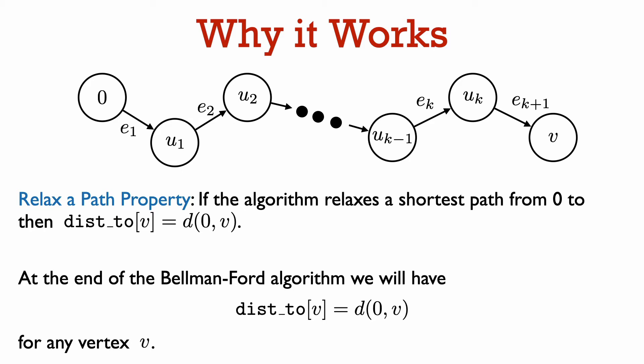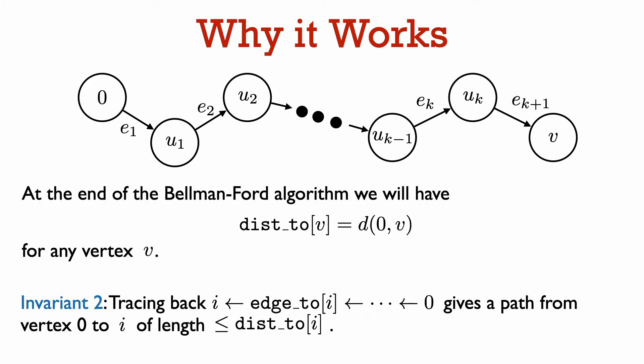This argument holds for any shortest path from zero to another vertex. So at the end of the algorithm, we will have dist2 of v equal to the distance from vertex zero to vertex v for every vertex v in the graph. Note that this will also hold for vertices not reachable from v, where dist2 of v will just be infinity. Since the Bellman-Ford algorithm follows the generic template, tracing back from vertex i using the edge2 array gives us a path from vertex zero to vertex i of length dist2 of i. So tracing back in the edge2 array from vertex i will give us a shortest path to vertex i, showing that Bellman-Ford solves the single source shortest path problem.